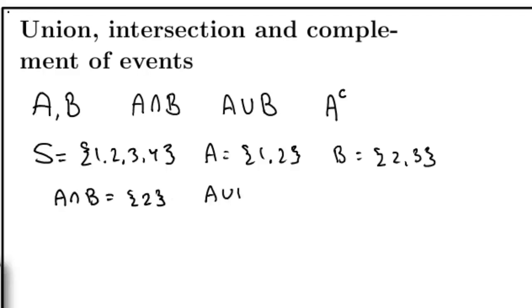The union would be 1, 2, and 3. 1, 2, and 3 are in either A or B, or both. And the complement of A would be 3, 4. Those are the elements not in A.